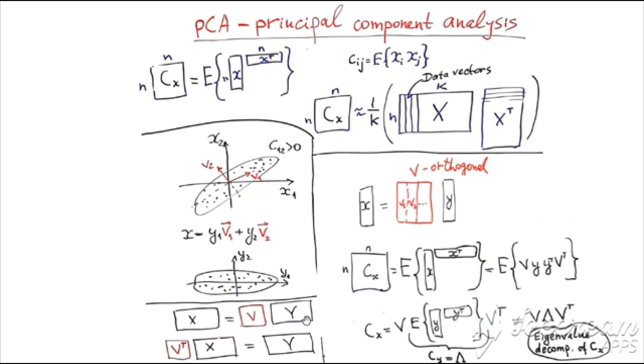Now, if we want to find Y, we can multiply from the left, the left-hand side and right-hand side of this equality by V transpose. V is an orthogonal matrix, so V transpose V is the identity matrix. And in this case, we get V transpose X equals Y. So in order to obtain the matrix of principal components in data sampling, we need to just multiply our original data by matrix V transpose, while matrix V, I remind you, was found as the eigenvalue decomposition of covariance matrix CX.